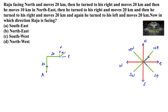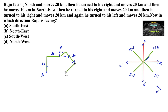He moves 20 km in the south-east direction. Then he turns to his right again — when facing south-east, turning right means he is now moving towards the south-west direction — and moves 20 km. Then he turned to his left and moves 20 km.